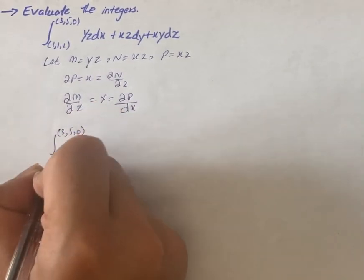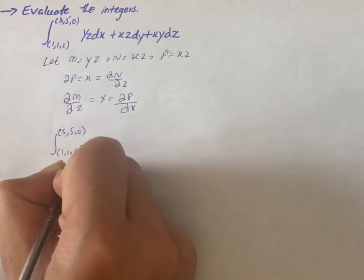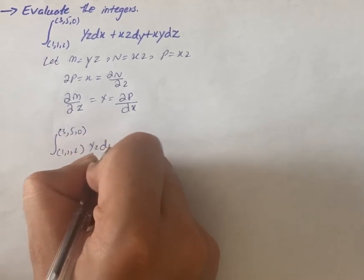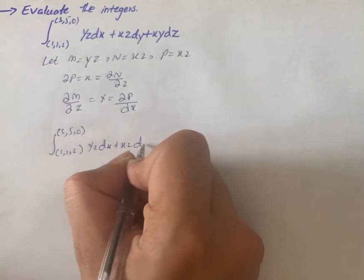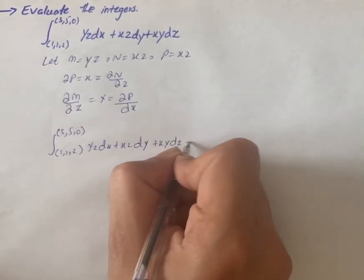three five zero and one one two, yzdx + xzdy + xydz that